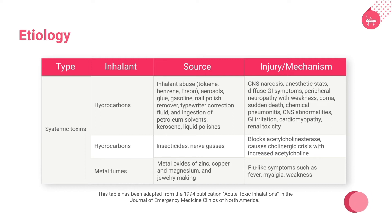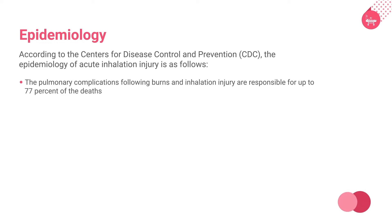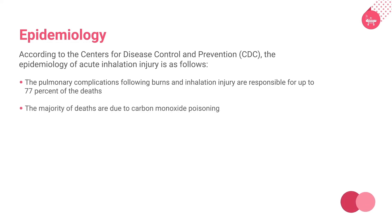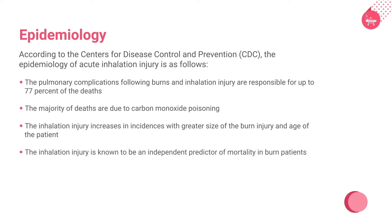We will cover the epidemiology of acute inhalation injury. According to reports published by the CDC in 2017, pulmonary complications following burns and inhalation injury are responsible for up to 77% of deaths, among which the majority are due to carbon monoxide poisoning. Inhalation injury is common after a burn injury and increases in incidence with greater burn size and patient age. It is also known to be an independent predictor of mortality in burn patients.